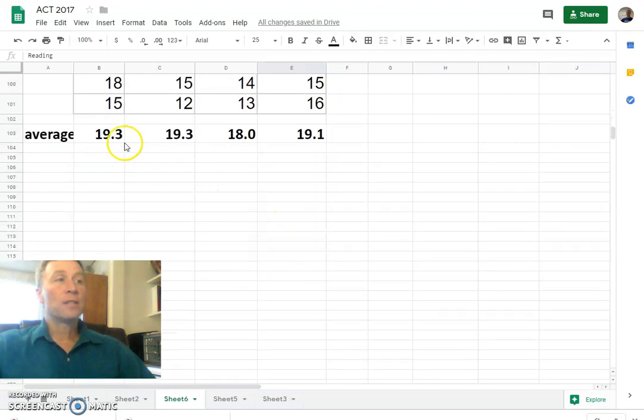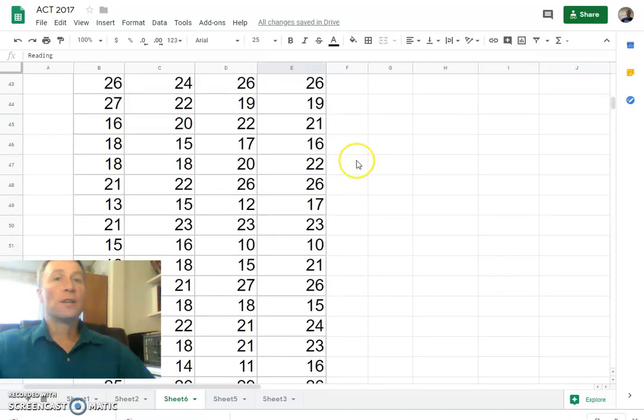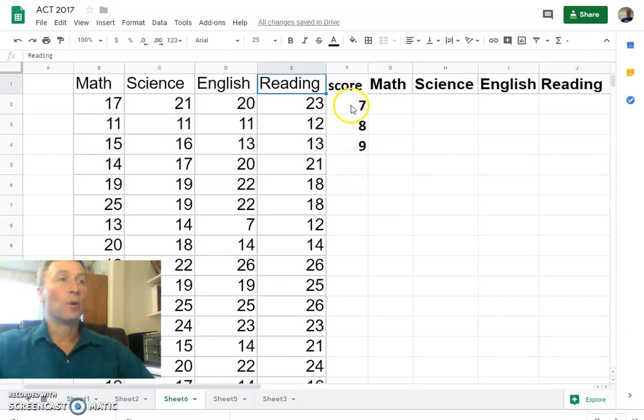You might look at averages. It doesn't tell us too much. Maybe the English is a little lower. Let's look at a cumulative percentile graph and see if we can see a little more.